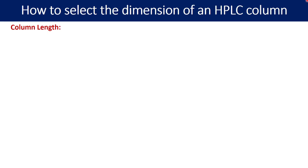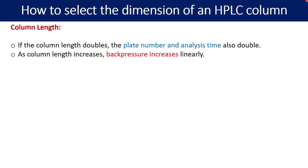The next parameter is the column length. So how can the column length be optimized for your separation? If the column length doubles, the plate number and analysis time also get doubled. You can also understand that the resolution can get better with the increased column length. As column length increases, the back pressure increases linearly.